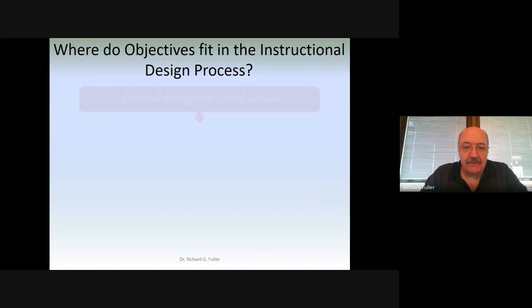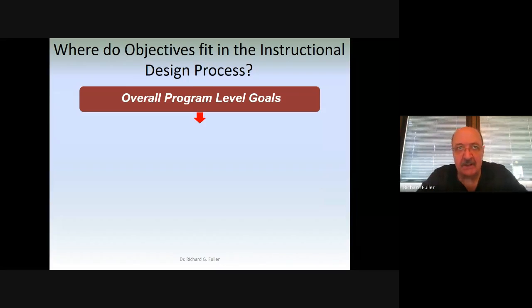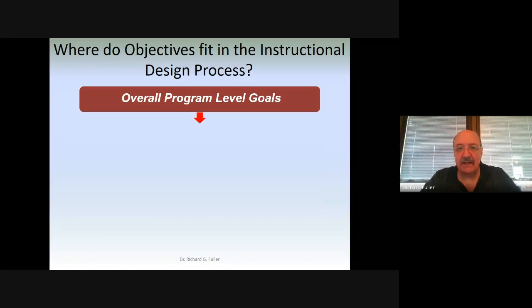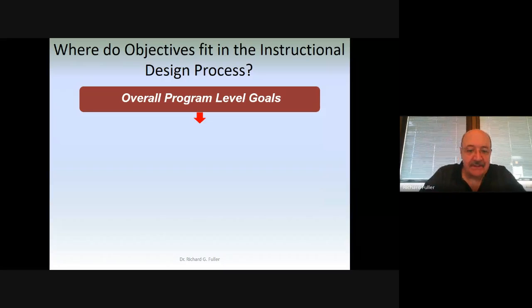The first thing that happens is we establish program-level goals. You've looked at the overall program-level goals — what is it that you want this PhD to entail? In other words, a student who leaves your program after completing everything and graduating: you've established a set of program goals about what the student is going to learn, what they know, what they can do, and what they're able to apply.